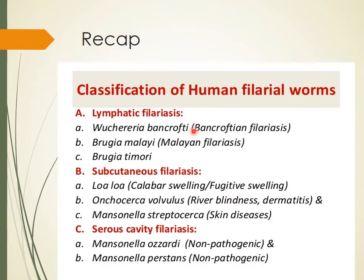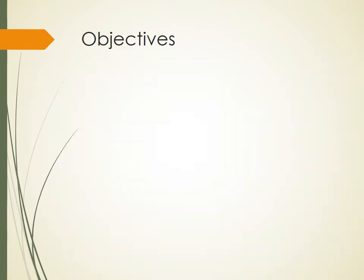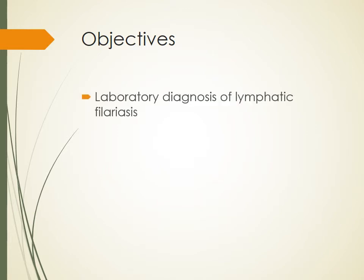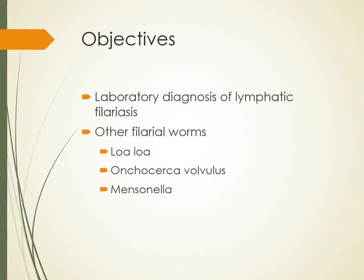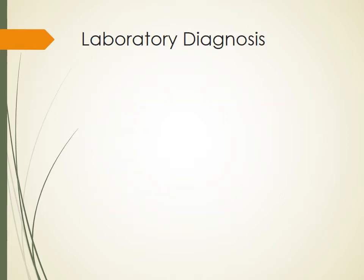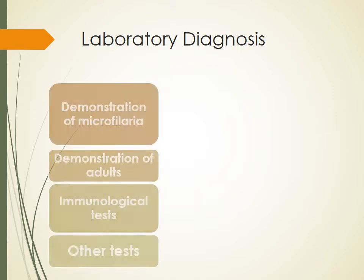Today we will discuss the following things: first, the laboratory diagnosis of lymphatic filariasis, which is very common in India and produces elephantiasis. We will also discuss other filarial worms like Loa loa, Onchocerca volvulus, and Mansonella. We will discuss prevention and control of this disease. These are the objectives of today's lecture, starting with the most important topic — laboratory diagnosis of lymphatic filariasis.